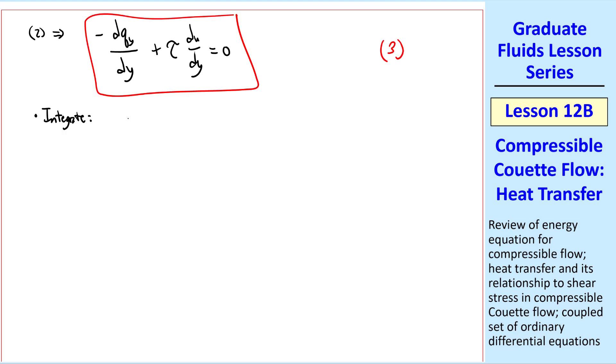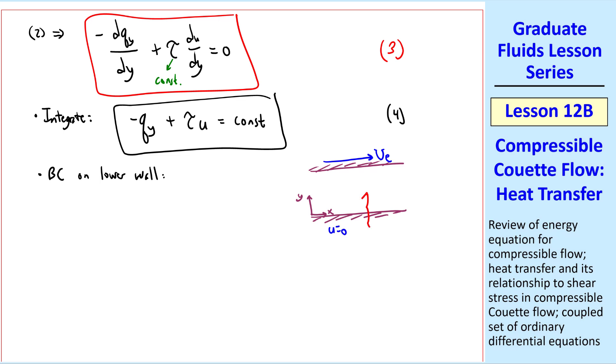We can integrate, with respect to y of course. We get negative qy plus tau u, since tau itself is a constant. And this must equal some constant of integration. I'll call that 4. Let's apply a boundary condition on the lower wall to find this constant. We know that u equals 0 at the lower wall, and let's let qy equal qw, where we had called the lower wall w and the upper wall e in our previous lesson. So this equation becomes negative qw plus 0, since u equals 0 at this lower wall, equal constant. So the constant equal negative qw, the heat flux through the lower wall, and 4 thus becomes negative qy plus tau u equal negative qw.